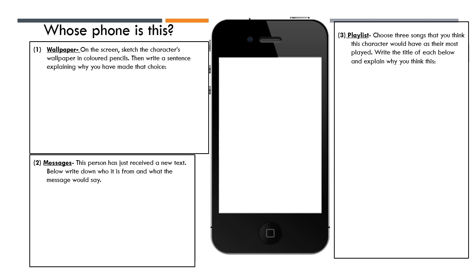The third thing you are going to do is create a playlist. You are going to choose three songs that you think this character would have as their most played. Write the title of each song and then attempt to explain why you think they would like that song. You can use songs you know, or perhaps ask your siblings and family for suggestions.